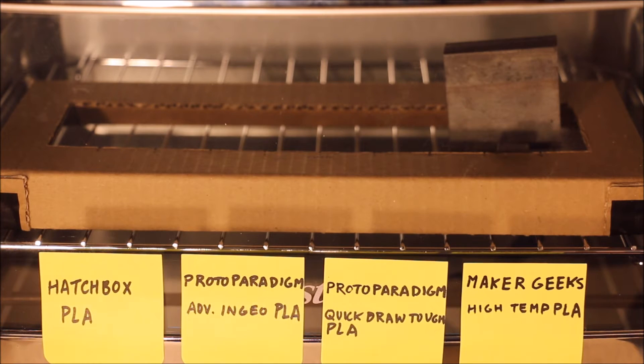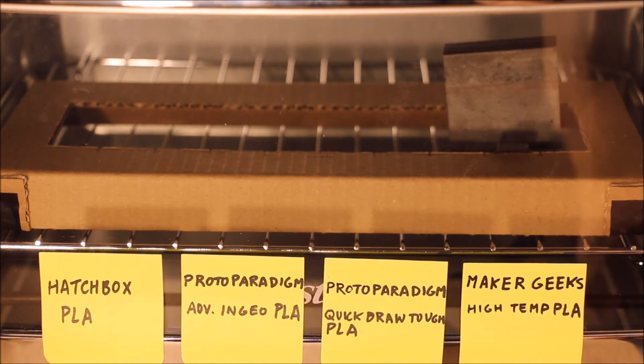So this is Maker Geeks High Temp PLA, which is supposedly dishwasher safe. And assuming dishwashers can go up to at least 100 degrees C with steaming and boiling water, it's a little bit disconcerting that your part will be flexing in the dishwasher at only 55 to 60 degrees C.